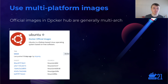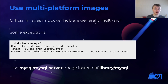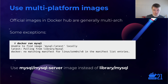The official images on Docker Hub are generally all multi-arch. Here's Ubuntu and you can see in the Hub UI all the platforms it supports. There are some exceptions though — a common one that people usually hit is that the MySQL image does not currently have an ARM64 variant, and you get an error. The solution for this problem is to just use the MySQL Server image instead, which should be a drop-in replacement.